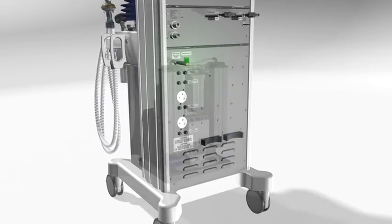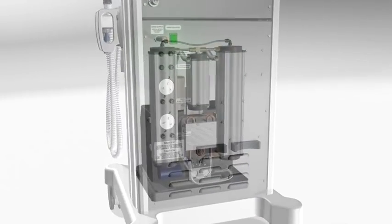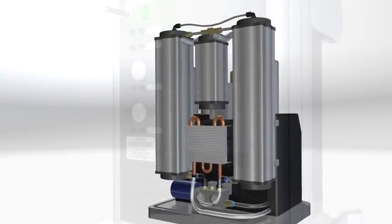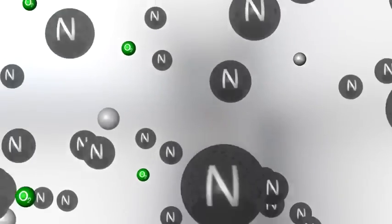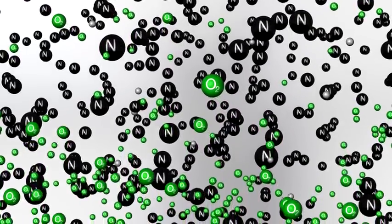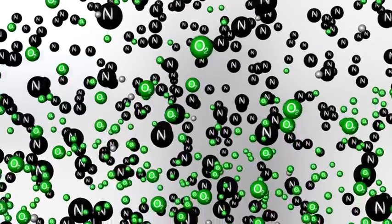Most importantly, the machine produces its own oxygen using an integrated concentrator that enriches room air. Ambient air is made up of 78% nitrogen, 21% oxygen and 1% other gases.